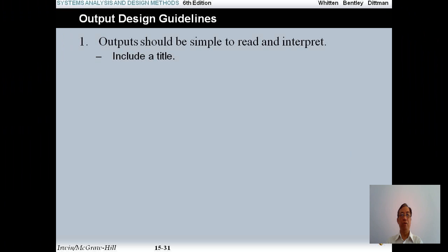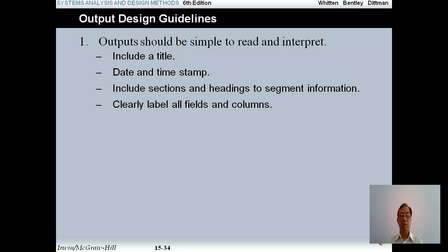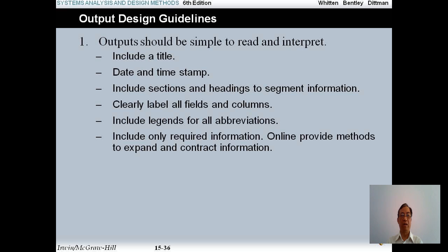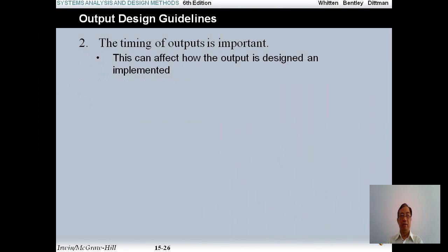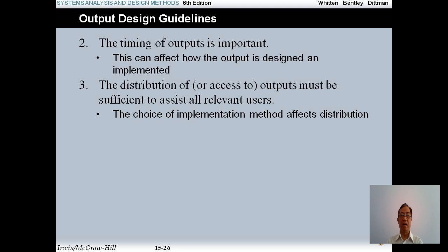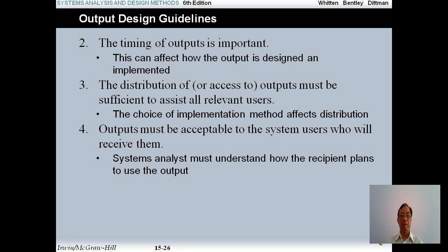In the output design guidelines, remember that output should be simple to read and interpret. Include a title, date, and timestamp. Include section headings to segment information. Use clear labels on fields and columns, and include a legend for all abbreviations so readers understand them clearly. Include only the required information, and provide a method to expand and contract information. Information should be balanced across the page or screen. The timing of output is important — it can affect how the output is designed and implemented. Distribution or access to outputs must be sufficient to assist all relevant users. The system analyst must understand how the recipient plans to use the output and what the customer requires before designing it.